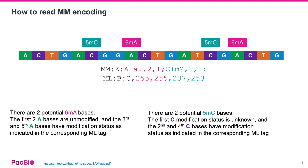Moving on, we note that 5mC is detected with the C+M question mark annotation, followed by two encodings telling us there are two potential 5mC bases. The first encoding of value 1 tells us that the first cytosine has unknown modification status and the second cytosine has a detected 5mC modification with a corresponding probability of 237. The next encoding of value 1 tells us that from the previous cytosine, the next cytosine has unknown modification status, but the following cytosine has a 5mC detection with a corresponding probability of 253.